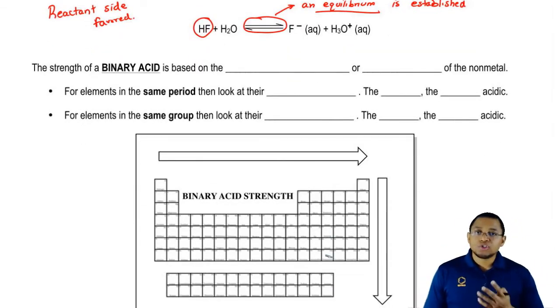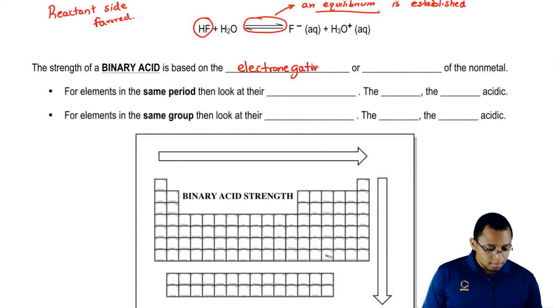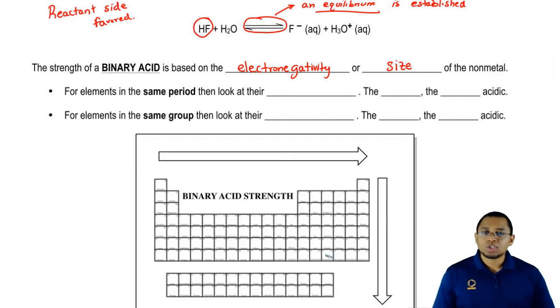The strength of a binary acid is based on two major factors. First, it's based on the electronegativity or the size of the nonmetal that's connected to my hydrogen. In this case, the nonmetal in HCl we're talking about is Cl and in HF, the nonmetal we're talking about is fluorine. So, the strength of a binary acid is based on those two factors, electronegativity as well as the size of the nonmetal.